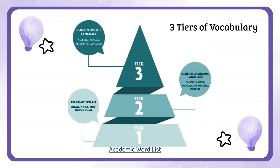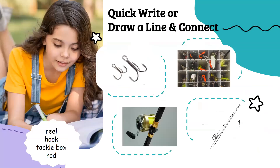When we look at the three tiers of vocabulary, the tier one vocabulary at the bottom — our everyday speech — makes up a large majority of the words we use. Then we move into our general academic words, which students need to be able to do; those are our tier two words. At the top, we're talking about our domain-specific words — tier three. Going back to the fishing example, those domain-specific fishing terms are our tier three words, specific to the content we're teaching.